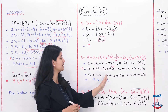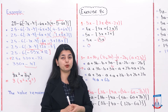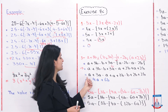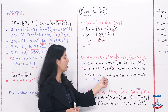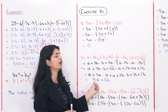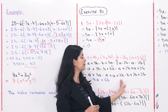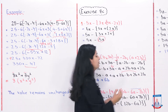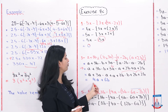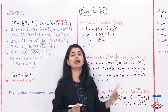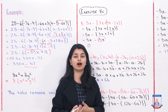So I write all terms with 'a' on one side and all terms with 'b' on the other, since only like terms can be added or subtracted. For the a terms: a plus 3a is 4a, 4a plus a is 5a, and 5a minus a gives 4a. For the b terms: 3b plus 2b is 5b, 5b plus 2b is 7b, and 7b minus b is 6b. So the final answer for question 3 is 4a plus 6b.